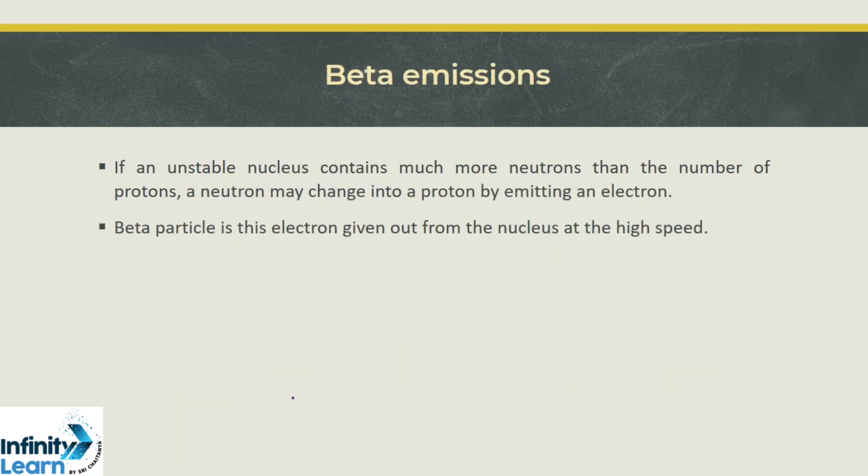Next, let us talk about beta emission. If an unstable nucleus contains more neutrons than protons, a neutron may change into a proton by emitting an electron. This emission is from the nucleus at very high speed, not the electron orbiting the nucleus.